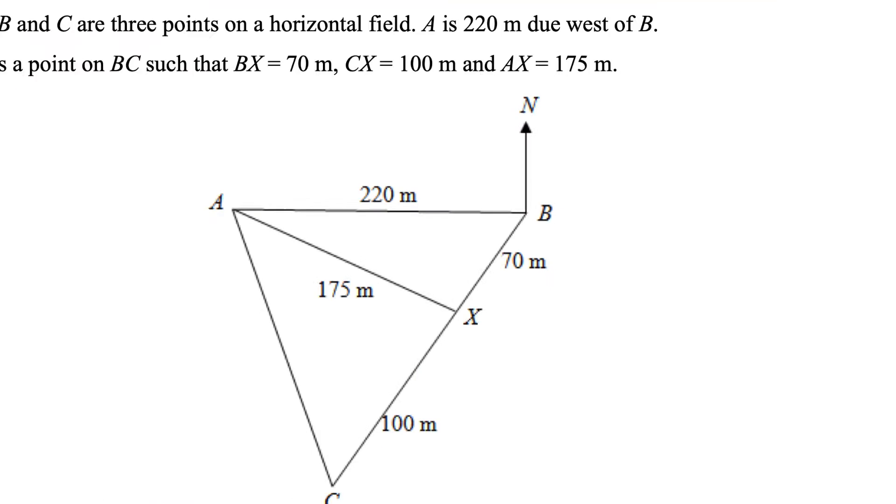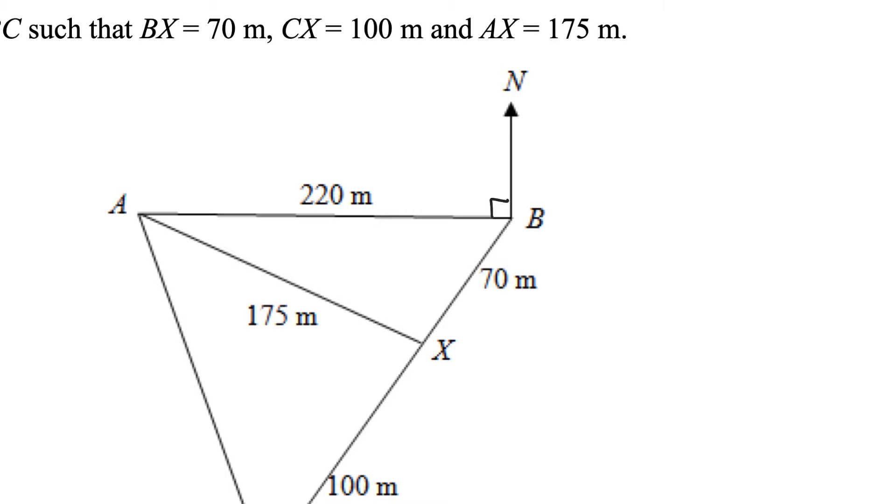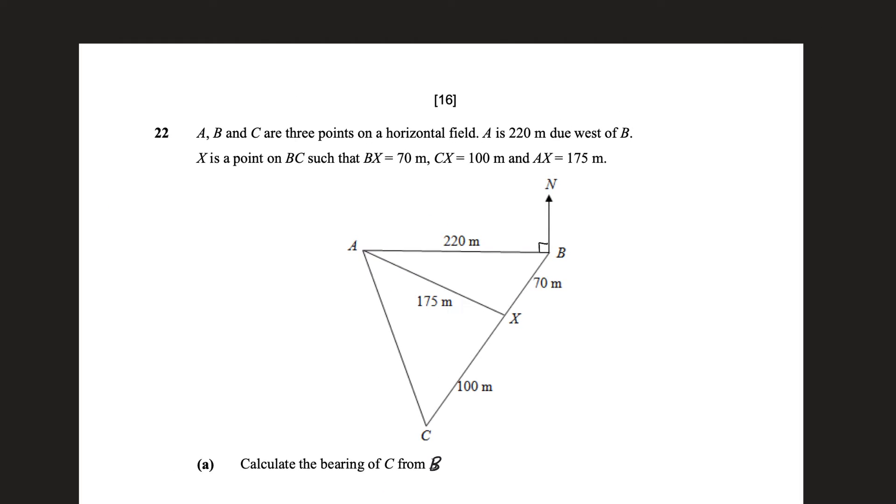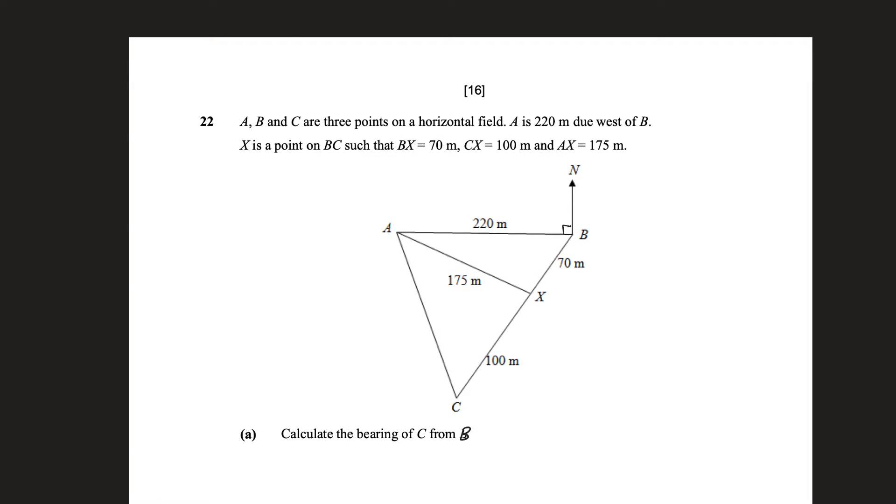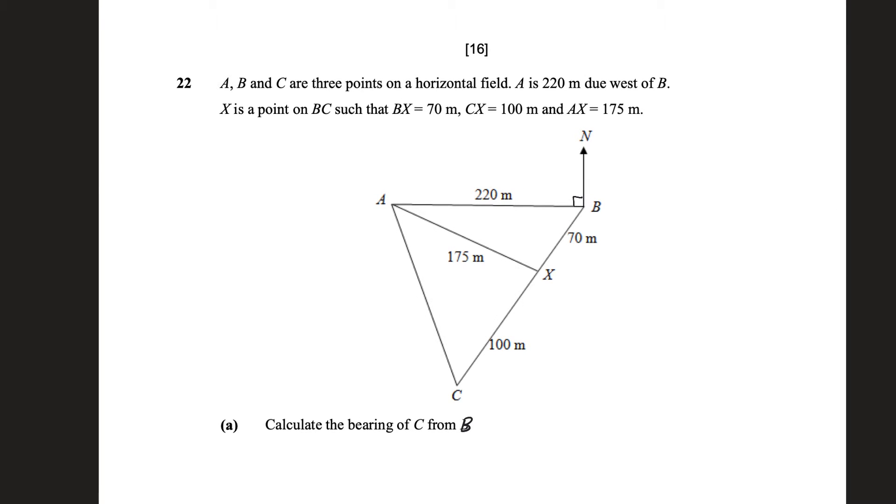So actually immediately that tells me this must be 90 degrees. If it's due west, it's a perfect 90 degrees west of B. X is a point on BC, over here, such that BX is 70 meters, CX is 100 meters, and AX is 175 meters. Good, they labeled it all for us.